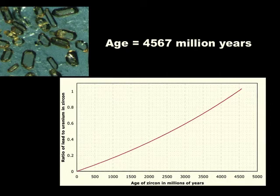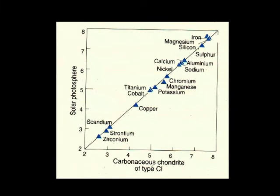That's the age of the oldest stuff in the solar system, and we think that's the beginning of the solar system. What else can I tell you about these chondrite meteorites? Well, they turn out to have the same chemistry as the star. On this graph, the horizontal axis shows the composition of chondrite — there are several different kinds but they're all broadly the same — carbonaceous chondrite of type CI.